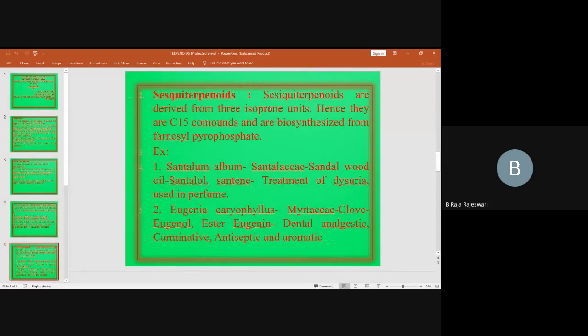Sesquiterpenoids are derived from three isoprene units. They are C15 compounds and are biosynthesized from farnesyl pyrophosphate. Example: Santalum album, Santalaceae, sandalwood oil, santalol, santene, treatment of dysuria and used in perfumery.